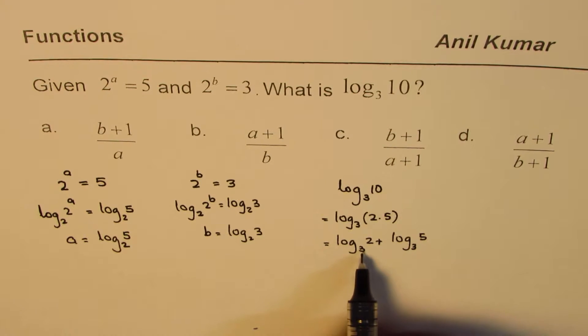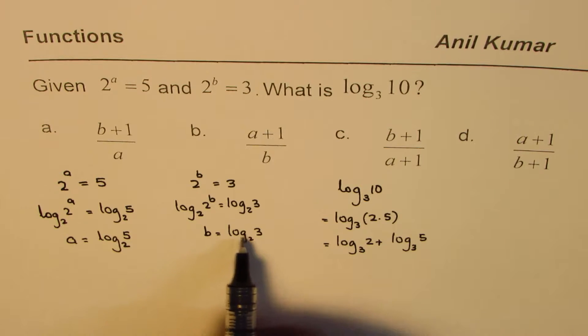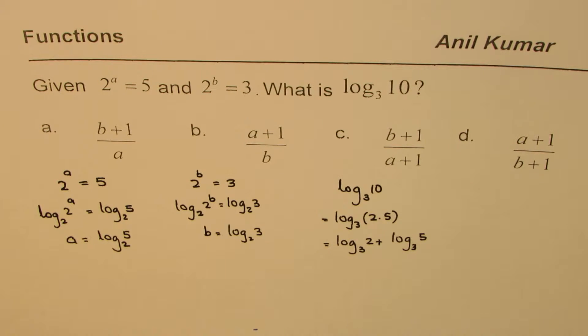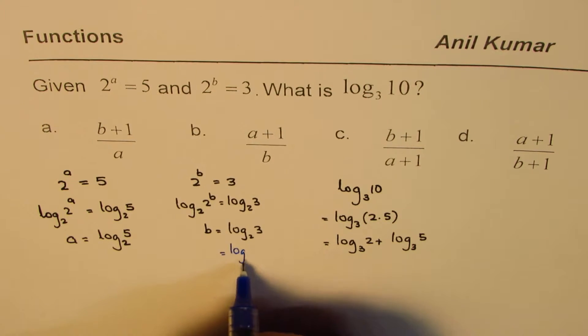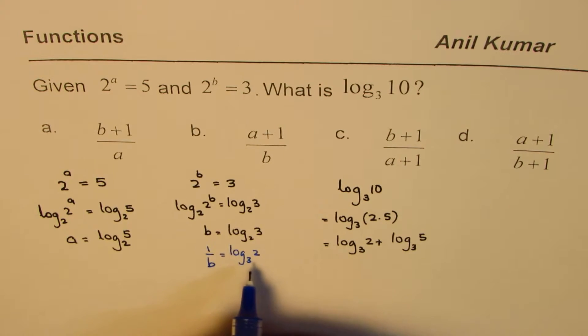Now what is log to the base 3 of 2? We know log to the base 2 of 3 is b. Now if you know the properties, we could write log to the base 3 of 2 as 1 over b. So that is the relation.